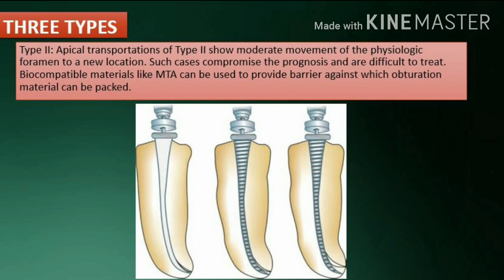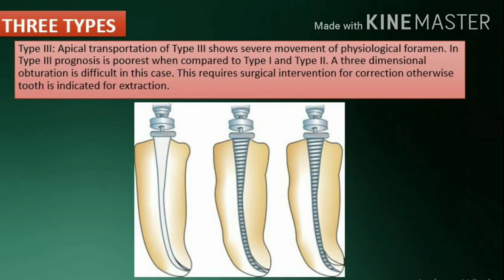Type 2: Apical transportation of type 2 shows moderate movement of the physiologic foramen to a new location. Such cases compromise the prognosis and are difficult to treat. Biocompatible materials like MTA can be used to provide a barrier against which obturation material can be packed.